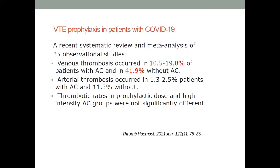A recent systematic review and meta-analysis of observational studies showed venous thrombosis occurred in close to 20 percent of patients with anticoagulation and close to 42 percent without anticoagulation. Despite the use of anticoagulation, we still have a far higher incidence than expected. Arterial thrombosis occurred in 1.3 to 2.5 percent of patients with anticoagulation and 11.3 percent without.